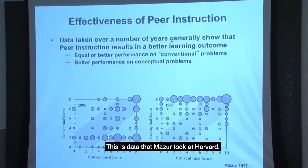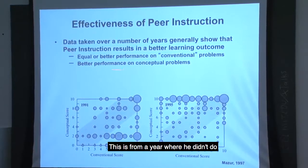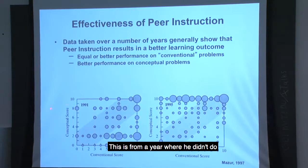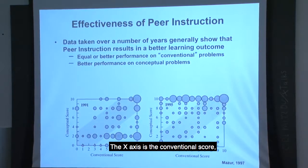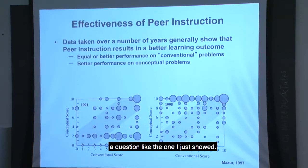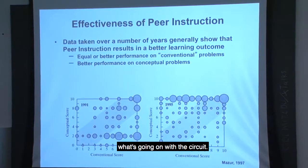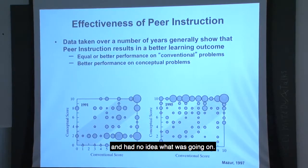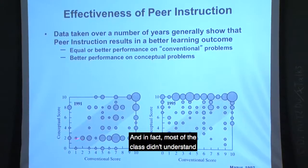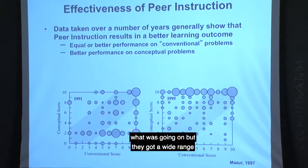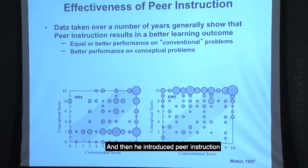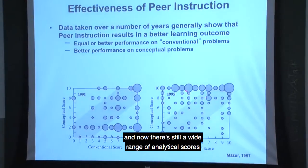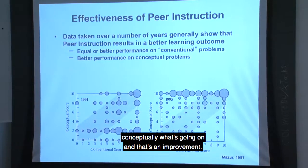There's data — Mazur took this at Harvard. This compares a year where he didn't do peer instruction to a year where he did. The x-axis is the conventional score — solve the equations using Kirchhoff's laws — and the vertical axis is whether students conceptually understand what's going on with the circuit. He found plenty of students who could completely solve the circuits but had no idea what was going on. Most of the class didn't understand, but had a wide range of analytical scores. After introducing peer instruction, there was still a wide range of analytical scores, but most of the class understood conceptually — and that's an improvement.